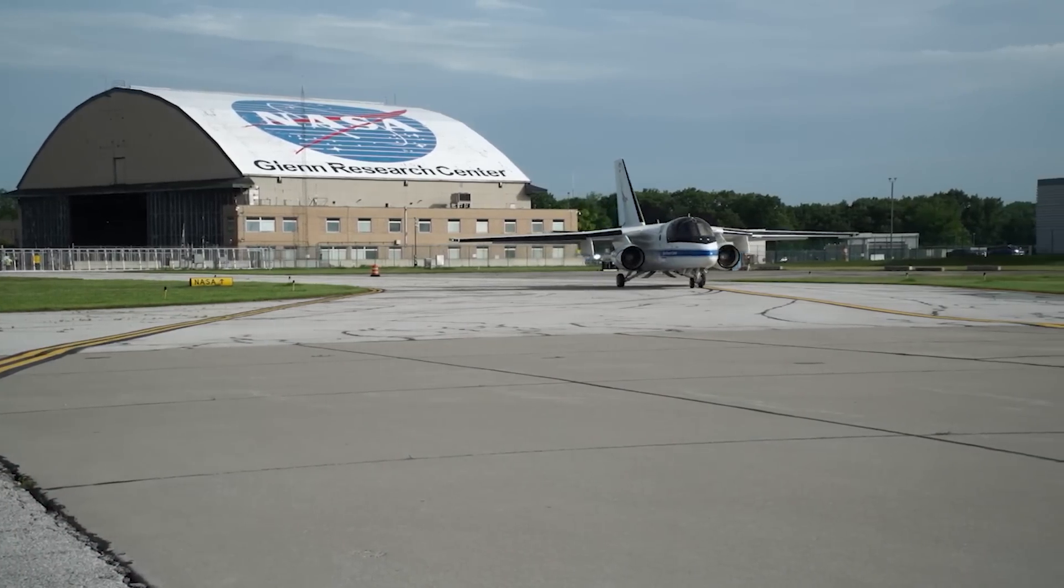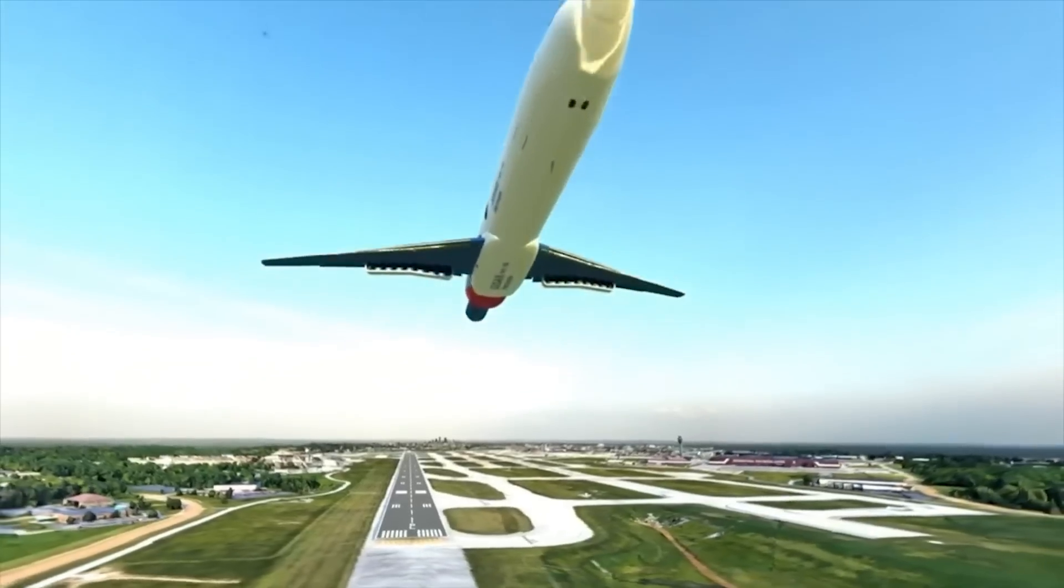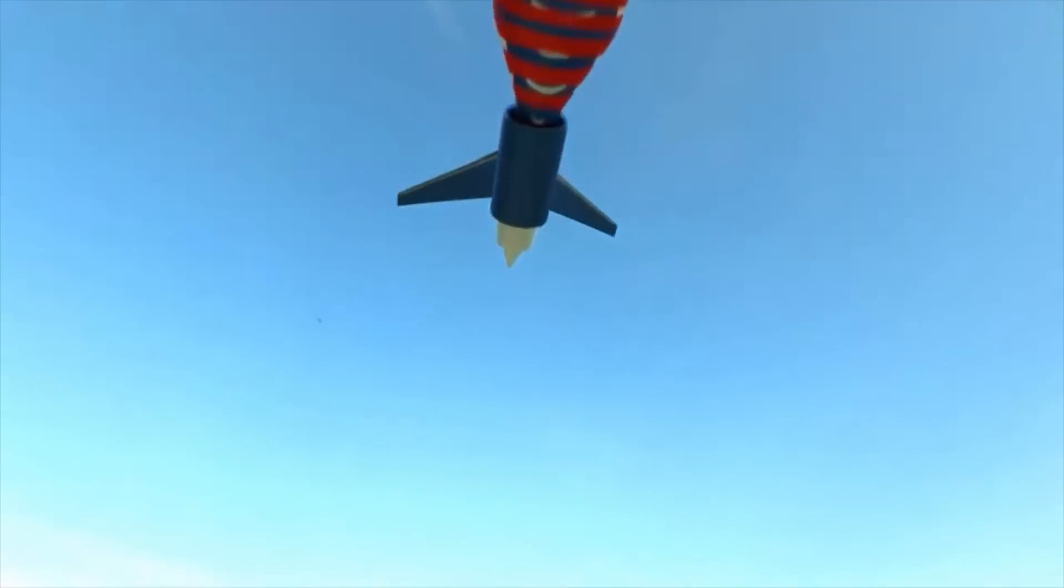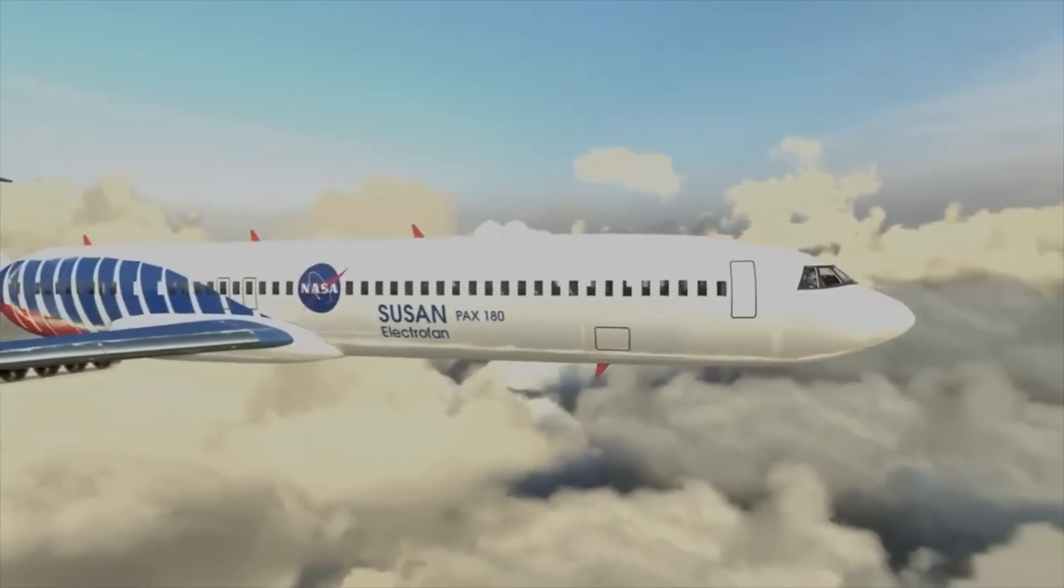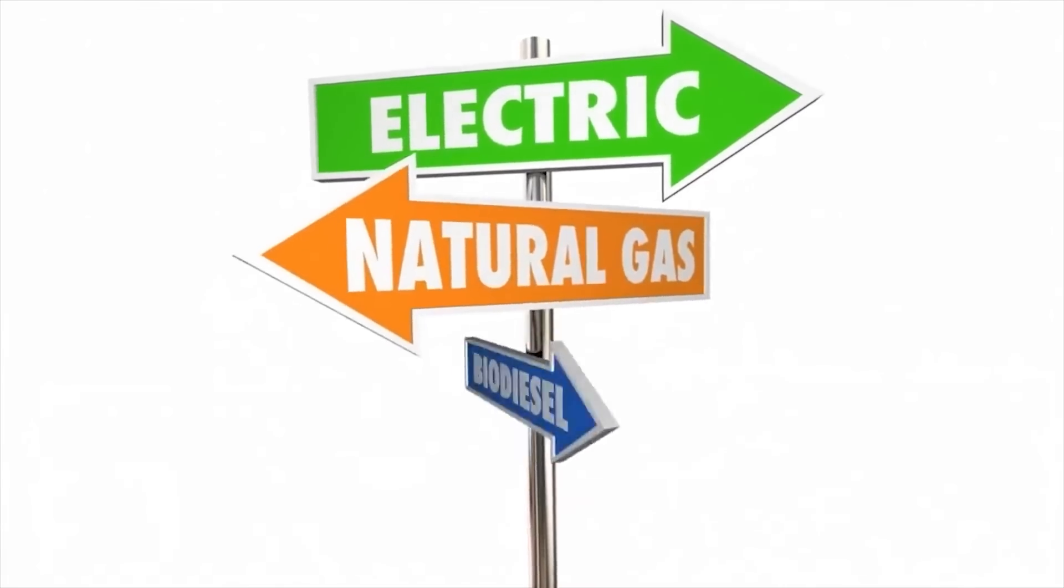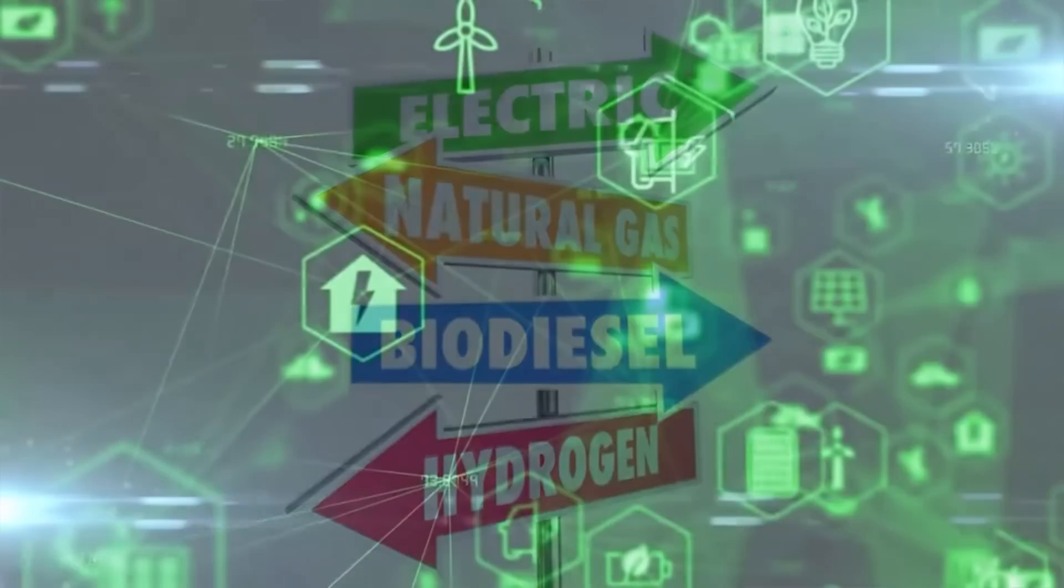The subsonic single-aft engine SUSAN electrofan is an advanced hybrid electric concept aircraft developed by NASA intended to reduce environmental impact and introduce cutting-edge technologies for sustainable subsonic regional transport aircraft.